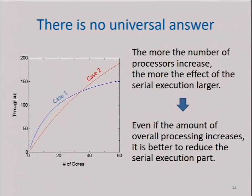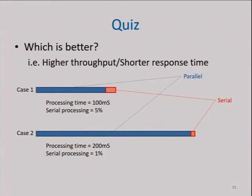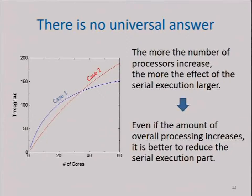In this graph, the x-axis is the number of cores and the y-axis shows throughput. In the region where the number of cores is small, total processing time is the primary factor, so Case 1 delivers better performance. On the other hand, when the number of cores is large, the primary factor shifts to serial processing time. So for software expected to run on servers with a large number of cores, it is necessary to reduce the serial processing time, even if the total processing time increases.